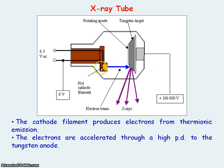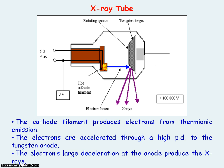The electrons are then accelerated through a very large potential difference to a tungsten anode, where the electrons undergo a very large deceleration, and hence X-rays are produced.